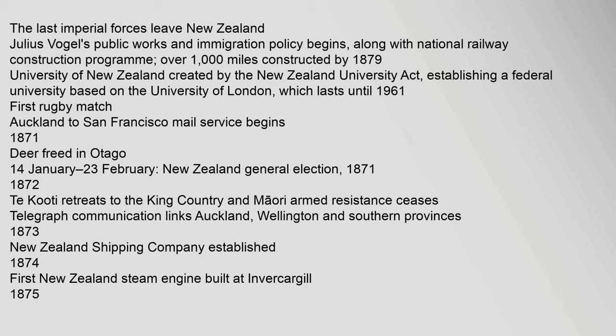1871: Deer freed in Otago. 14 January – 23 February: New Zealand general election. 1871–1872: Te Kooti retreats to the King Country and Maori armed resistance ceases. Telegraph communication links Auckland, Wellington and Southern provinces. 1873: New Zealand Shipping Company established. 1874: First New Zealand steam engine built at Invercargill.